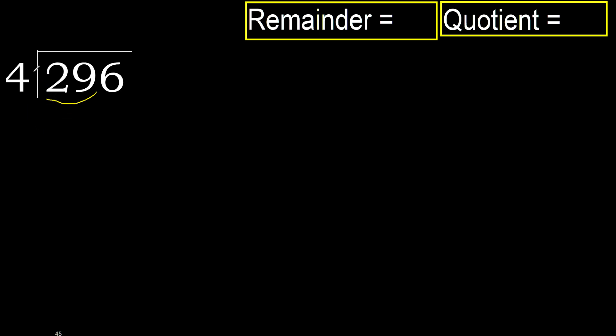We divide 29 by 4. Multiply 4 by which number is nearest to 29 but not greater? 4 multiplied by 8 is greater, so multiply by 7. 4 multiplied by 7 is 28, which is not greater.